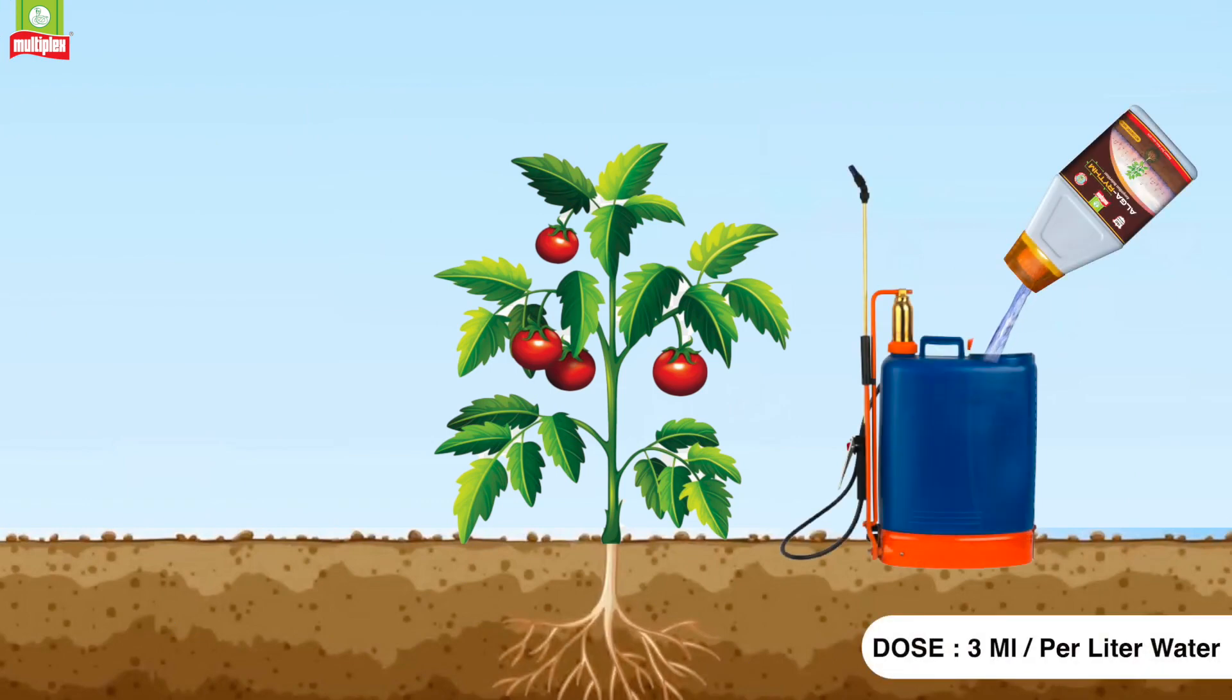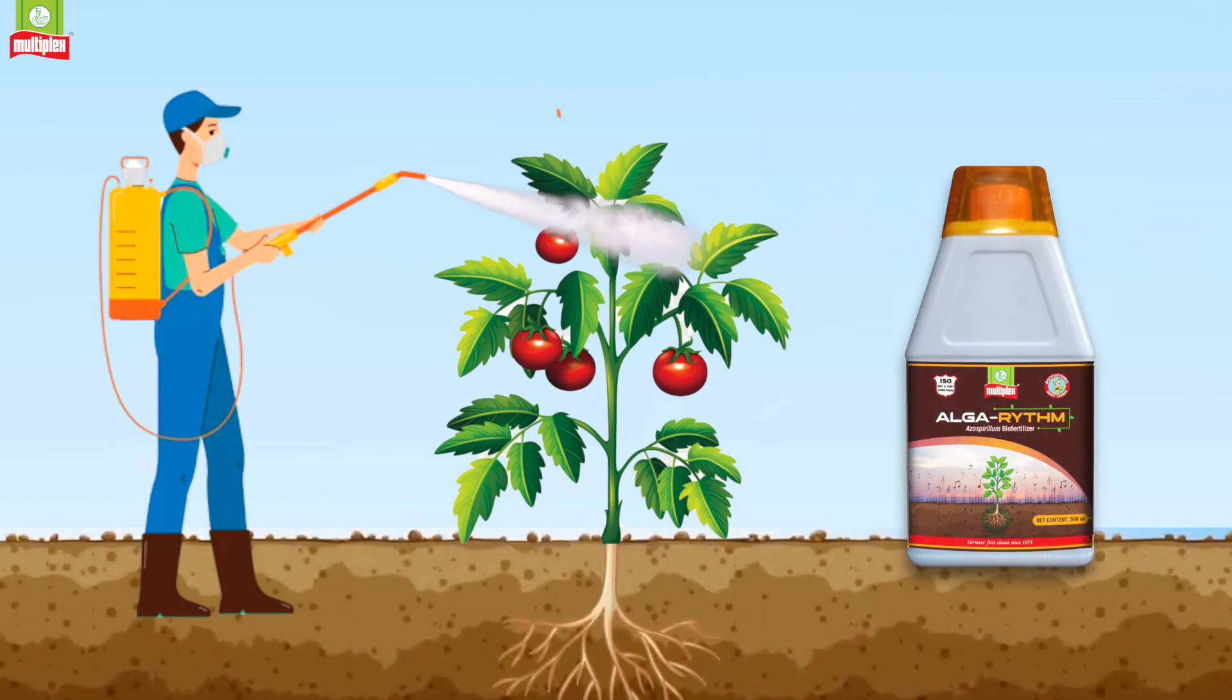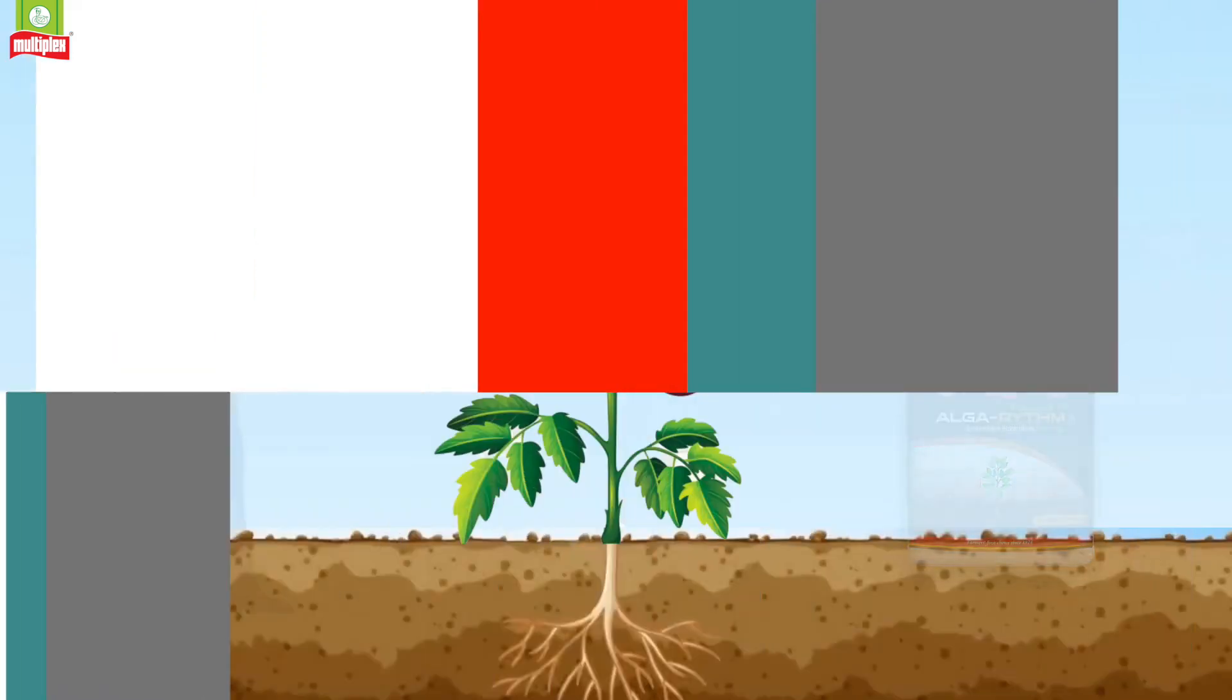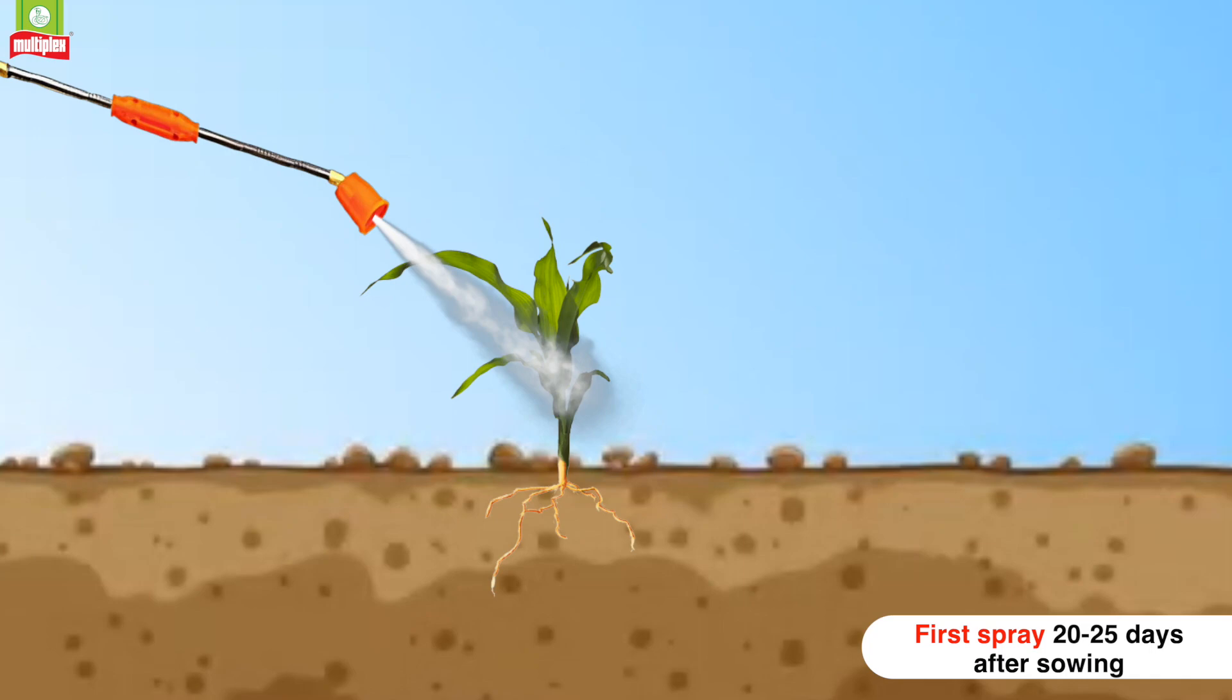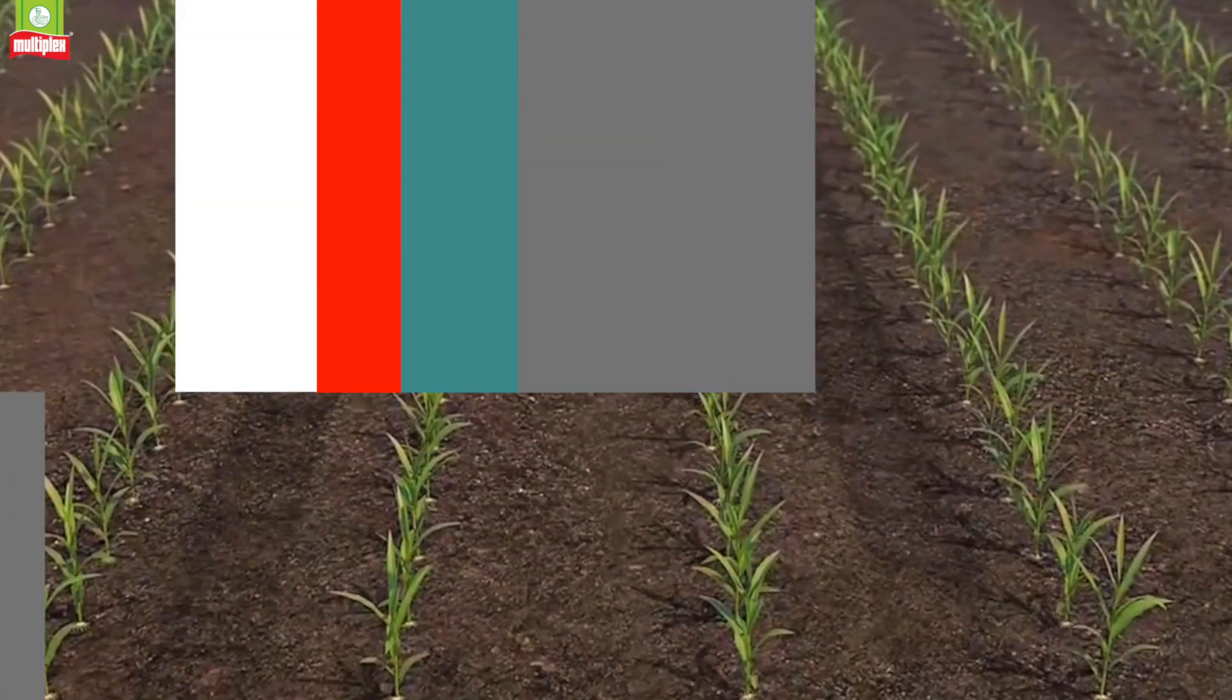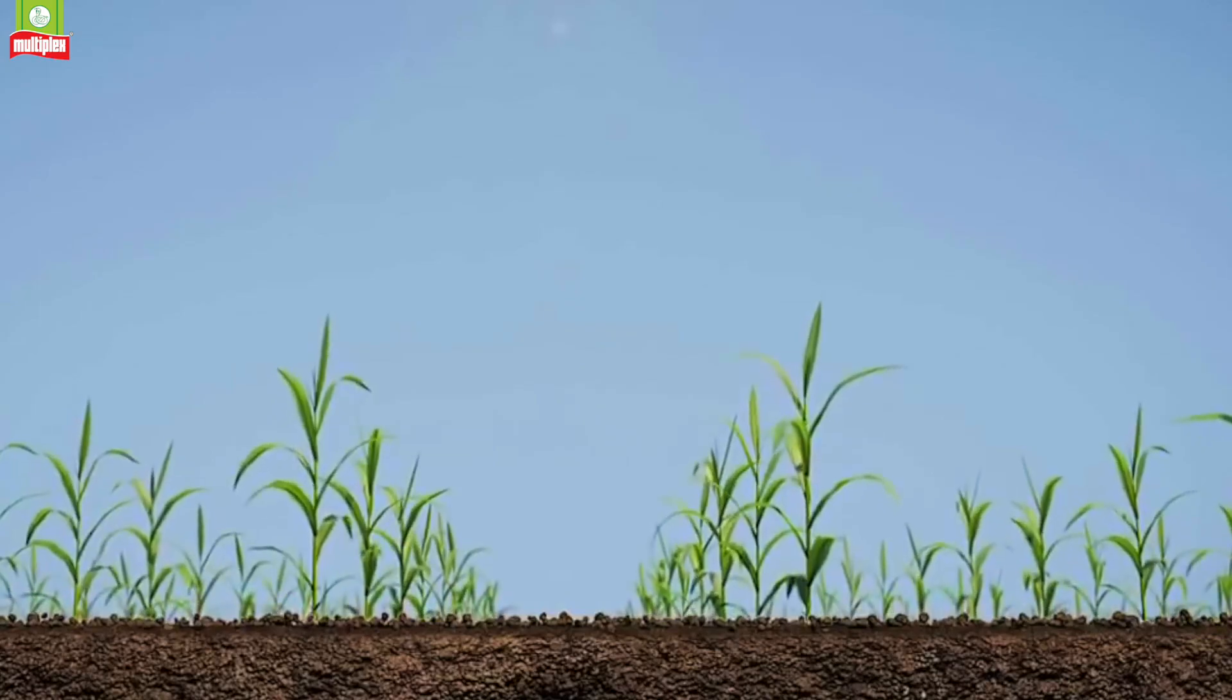Mix 3 ml of Algarhythm per liter of water, prepare the solution and spray on both sides of the leaves. Two sprays are recommended. The first spray needs to be given after 20-25 days after sowing, the second one after 15 days of first spray.